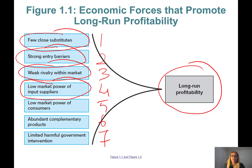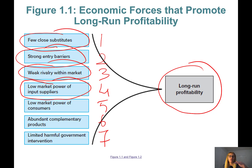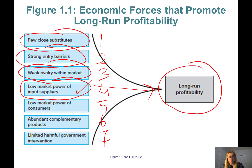The fourth factor is low market power of input suppliers. This includes your workers — are they unionized? If not, that's an advantage for the company. If the suppliers of raw materials and factors of production that you use to produce your product have low market power, meaning they can't charge any price they want, that is another force that will positively impact your long-run profitability.